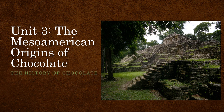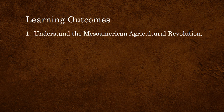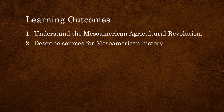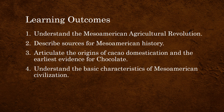Welcome to Unit 3 – The Mesoamerican Origins of Chocolate. The learning outcomes for this unit are: 1. Understand the Mesoamerican Agricultural Revolution. 2. Describe the sources for Mesoamerican history. 3. Articulate the origins of cacao domestication and the earliest evidence for chocolate. 4. Understand the basic characteristics of Mesoamerican civilization.